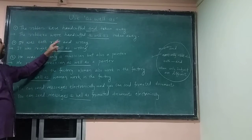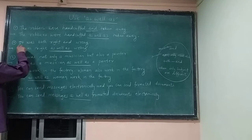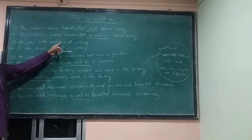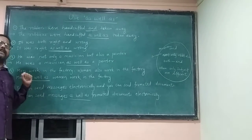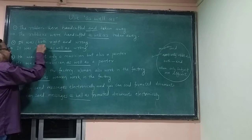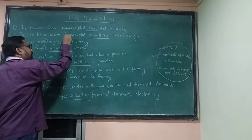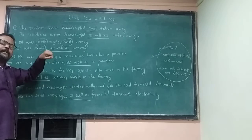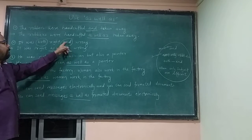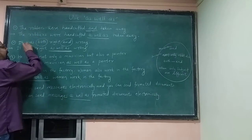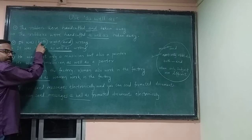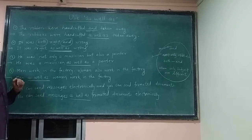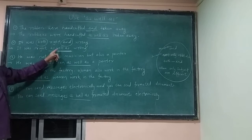In this sentence, both 'both' and 'and' are used. You have to remove 'both' and 'and' from the given sentence and use 'as well as' in their place. The result is: 'It was right as well as wrong.'